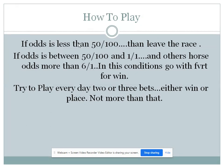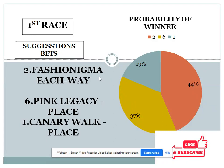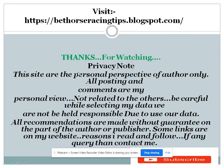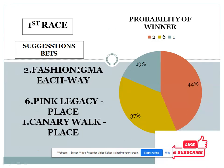Try to play every day with our three bets — either win or place, not more than that. Now we can talk about race number one at the South Africa racing center. Three choices are given: number two with 44 percent, number six with 37 percent, and number one with 19 percent. I am telling you how to read this diagram — try to find the maximum difference between the top two choices and the bottom two choices. The average difference you can find here is 10 percent.